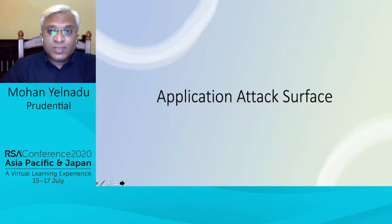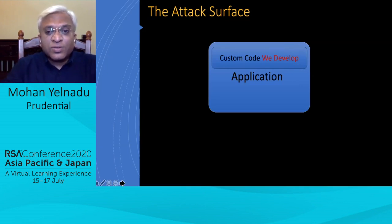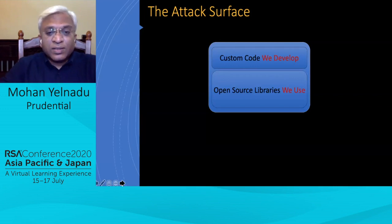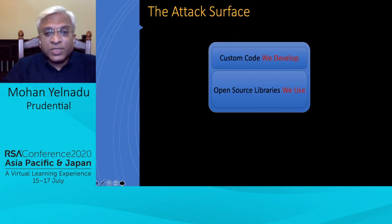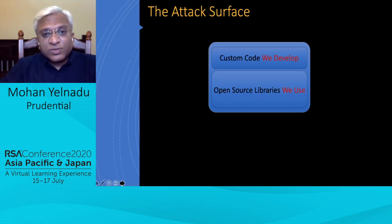Before we get into the tracks, it's important to understand the application attack surface. When we look at application security, the focus starts with the code — the custom code that developers develop. But equally important, sometimes even more so in terms of extent, are the open source libraries we use. The custom code is shrinking over the last few years, and more and more open source libraries are being used in application builds.